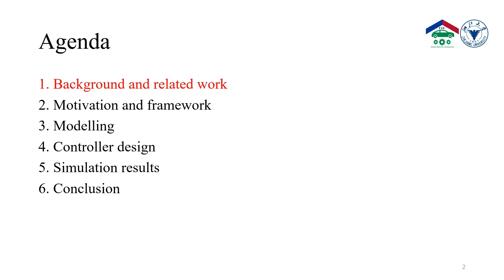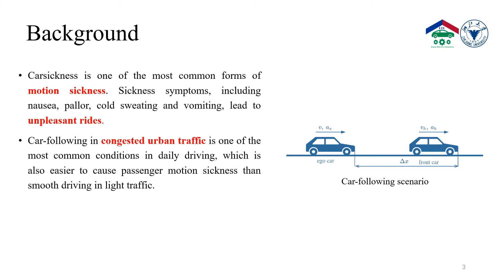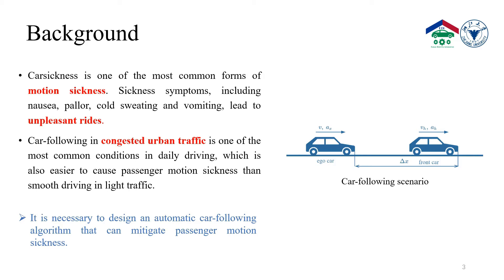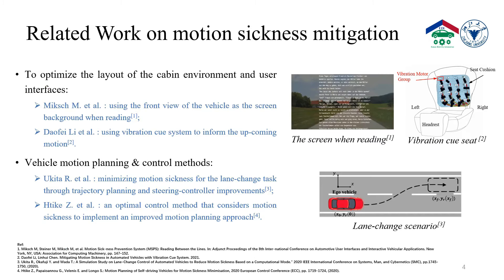The first part is background and related work. Car sickness is one of the most common forms of motion sickness, and it obviously leads to uncomfortable rides. Car following in congested urban traffic is one of the most common conditions in daily driving, which is also easier to cause passenger motion sickness than smooth driving in light traffic. The picture on the right is a typical scenario of car-following conditions. So, for more comfortable rides, it is necessary to design an automatic car-following algorithm that can mitigate passenger motion sickness.